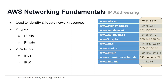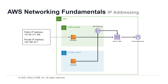Looking at how IP addressing works within VPCs: a compute instance within your subnet will have two IP addresses — the private IP address for addressing from within the subnet, and the public IP address, which is the one you ping from the internet to access your compute instance.